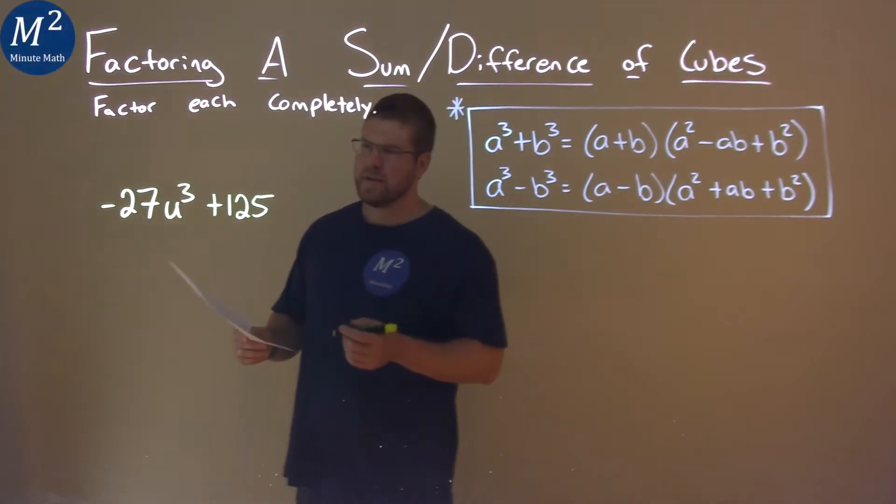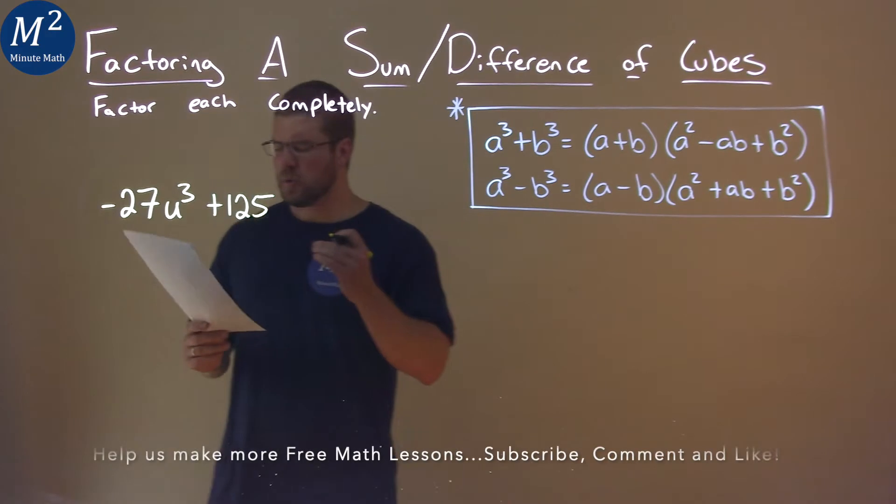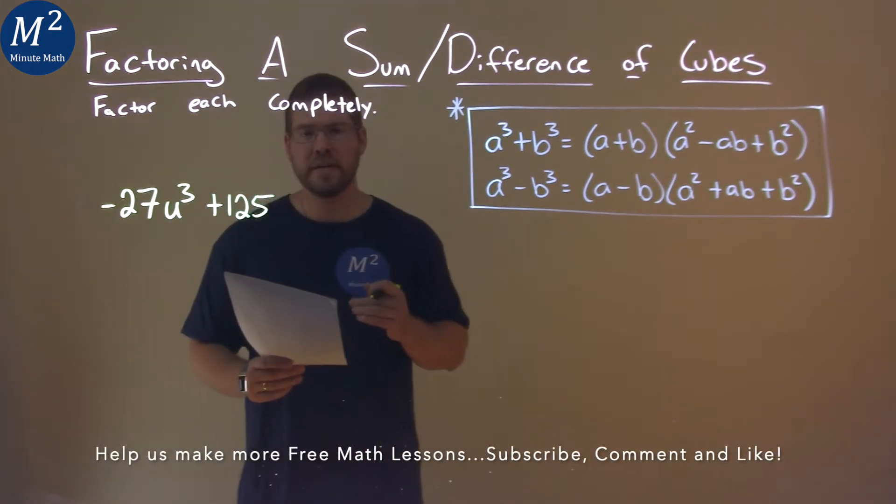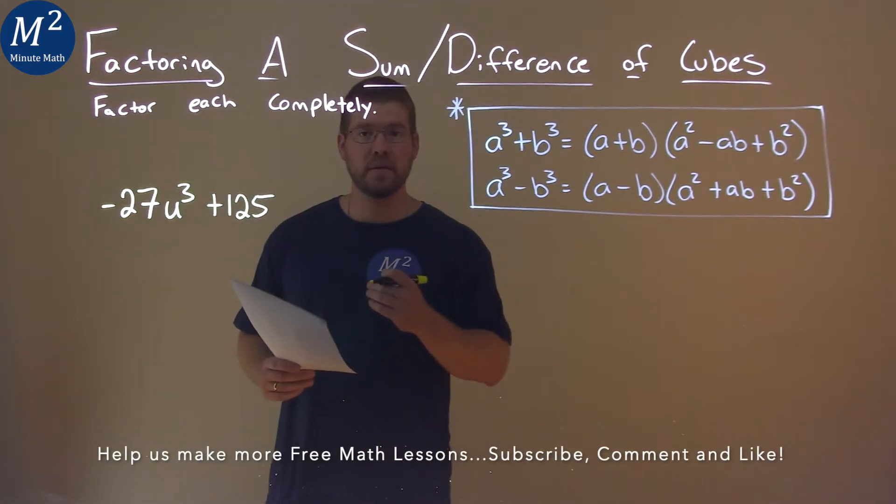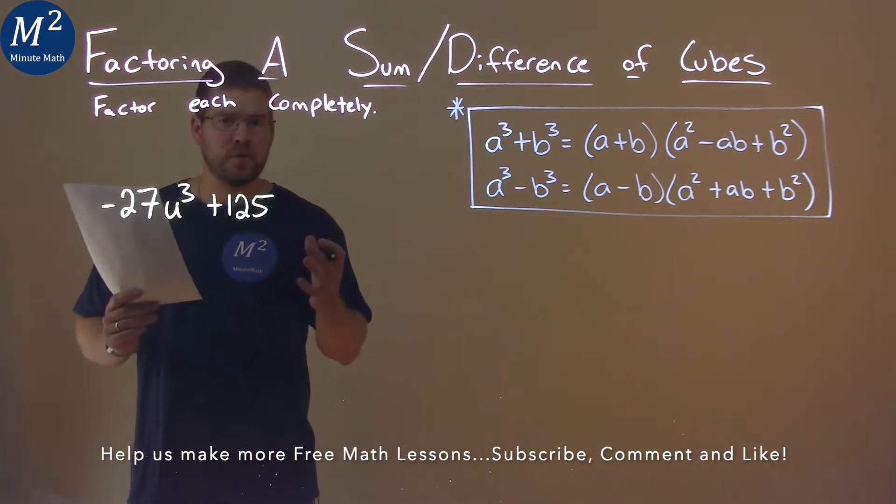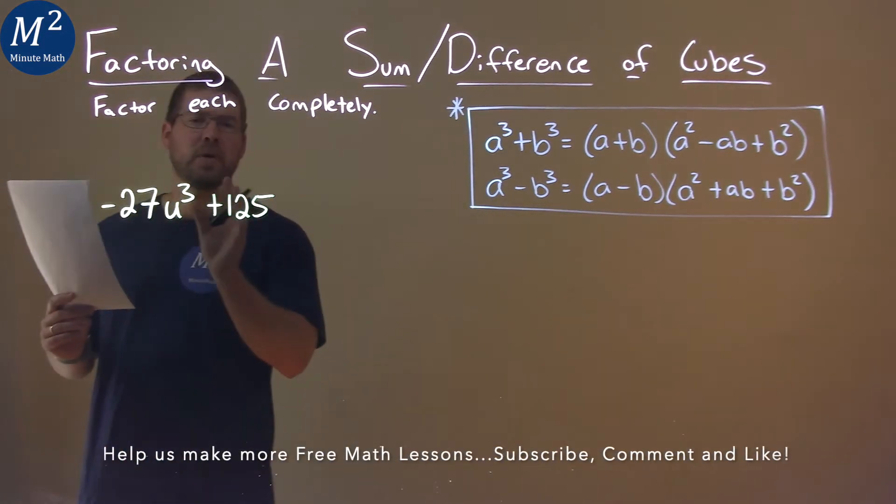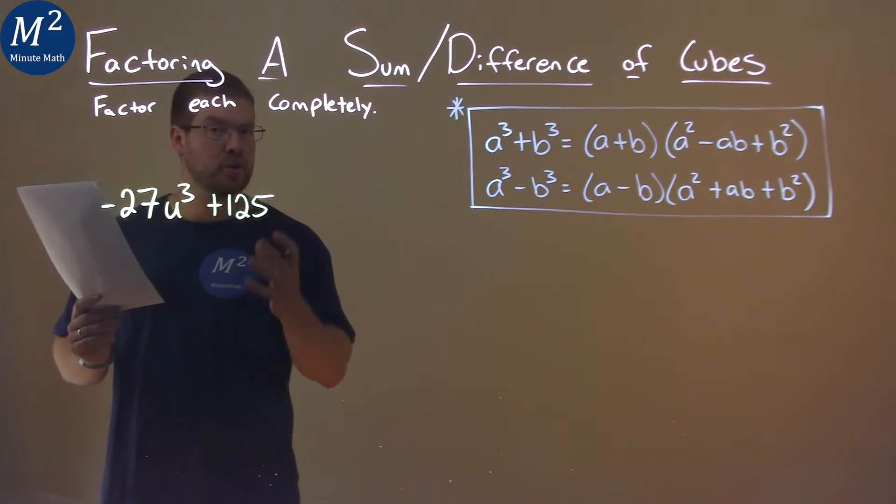We're given this problem right here, negative 27u cubed plus 125, and we need to factor this completely. The goal here is using the sum of cubes, and we want to find two parts just like this that are cubed.